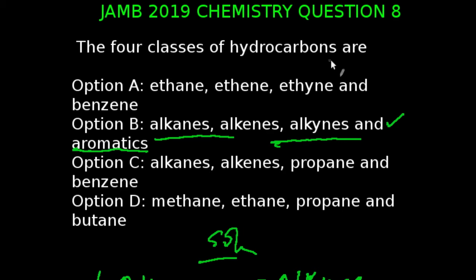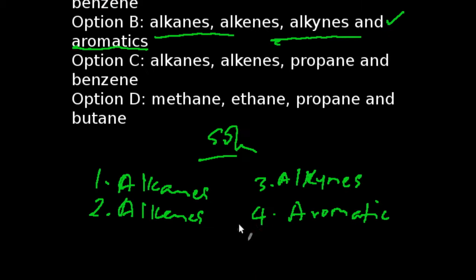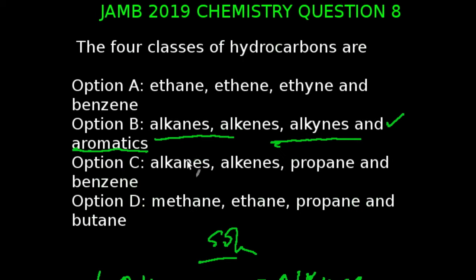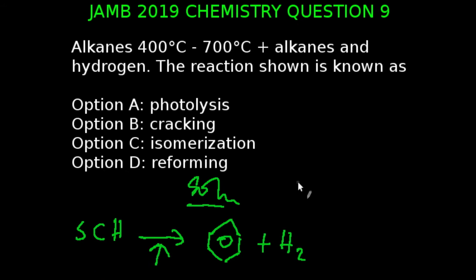You're looking at question eight of the JAMB 2019 chemistry examination. The four classes of hydrocarbons are... Hydrocarbons are organic compounds that contain hydrogen and carbon only. And there are four classes of hydrocarbons: alkanes, alkenes, alkynes, and aromatic. The correct answer to this question is option B.